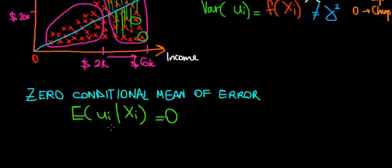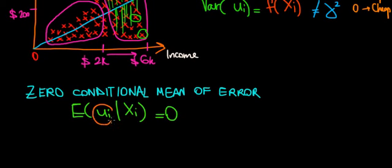Which mathematically means that the expected value of the error term, of the unexplained term, given an independent variable is equal to zero. And I want to prove now that this actually still holds true in this case, even though we have heteroscedasticity.